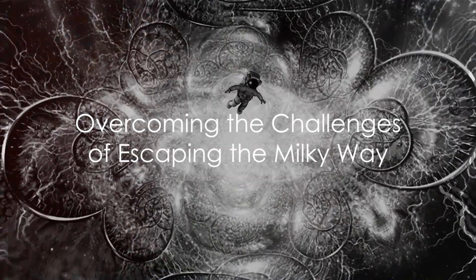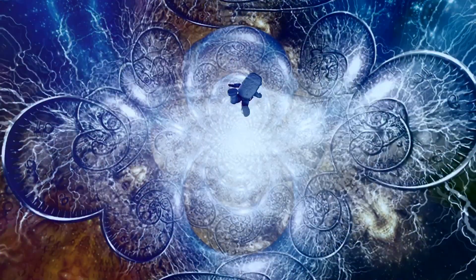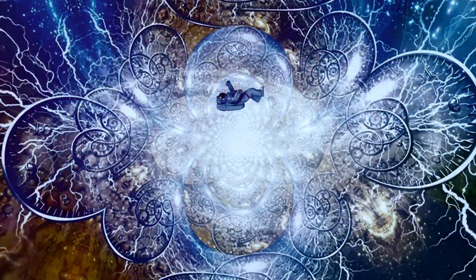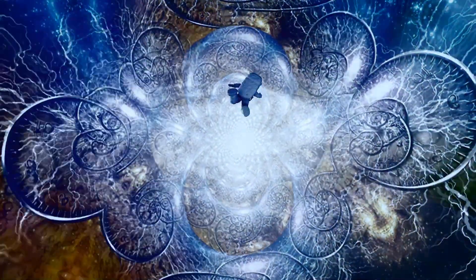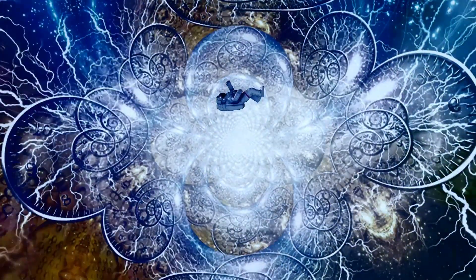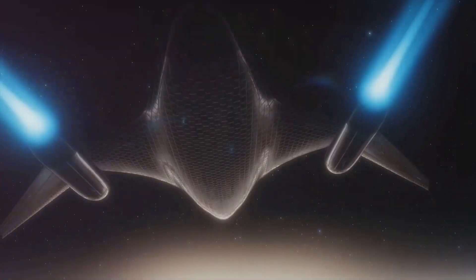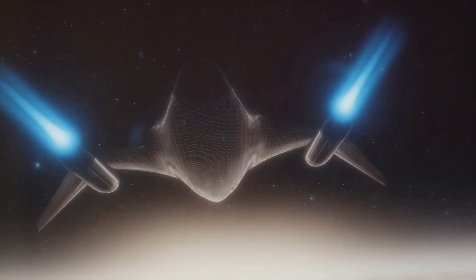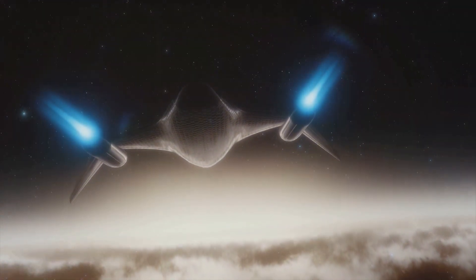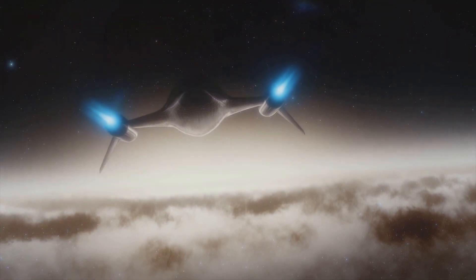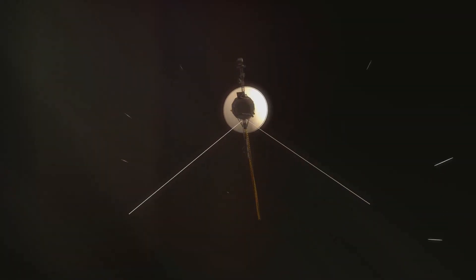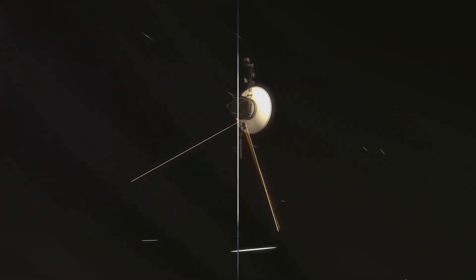To escape the Milky Way, we would need to overcome not just the vast distances, but also the immense gravitational pull of the galaxy. Just like Earth pulls an apple towards its core, the Milky Way pulls everything towards its center. To escape this pull, we would need to reach the galactic escape velocity, which is approximately 542 kilometers per second. That's over 30 times the speed Voyager 1 is currently traveling at.